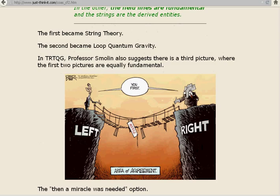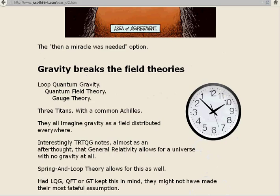Gravity breaks the field theories. Loop quantum gravity, quantum field theory, gauge theory, three titans with a common Achilles. They all imagined gravity as a field distributed everywhere. Interestingly, Three Roads to Quantum Gravity notes, almost as an afterthought, that general relativity allows for a universe with no gravity at all. Spring and loop theory allows for this as well. Had loop quantum gravity, quantum field theory, or gauge theory kept this in mind, they might not have made their most fateful assumption.